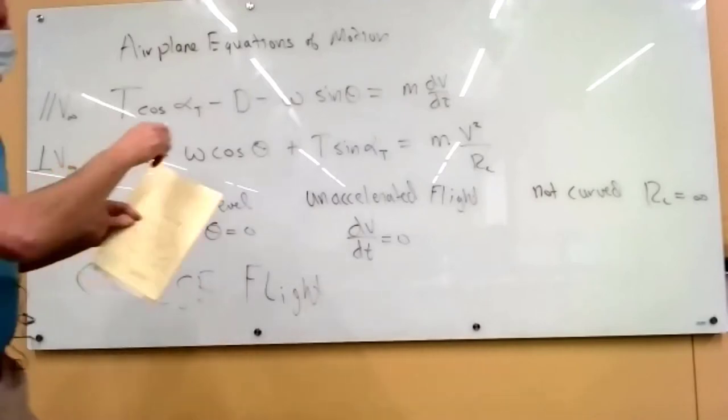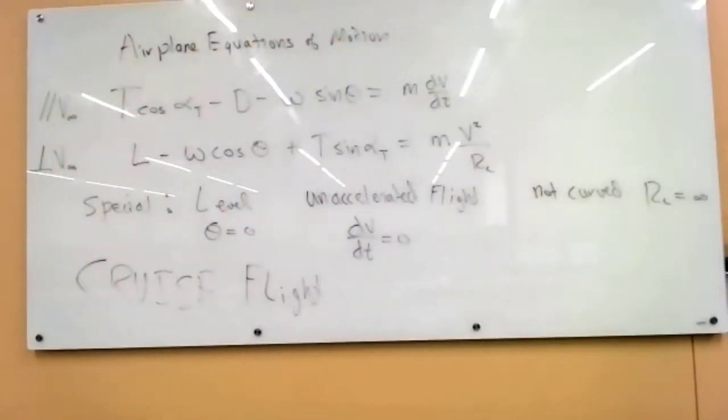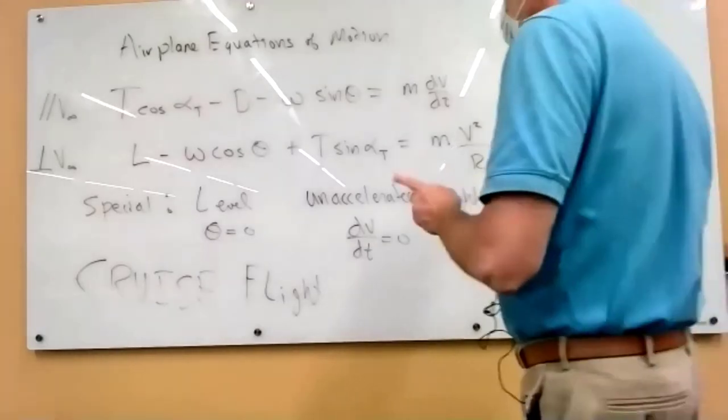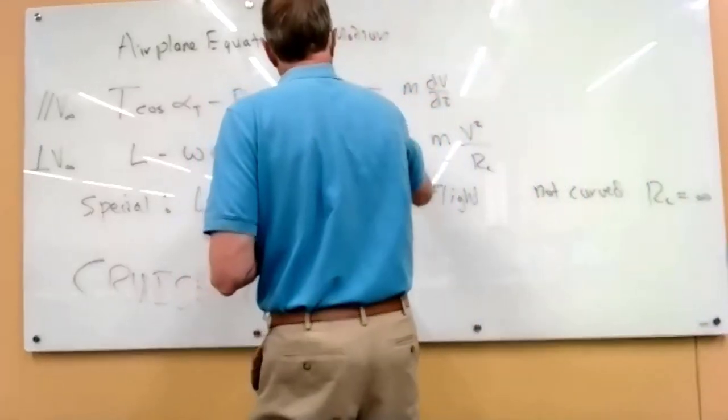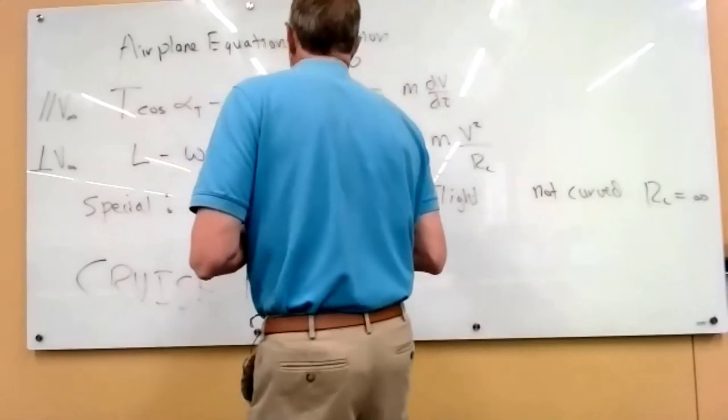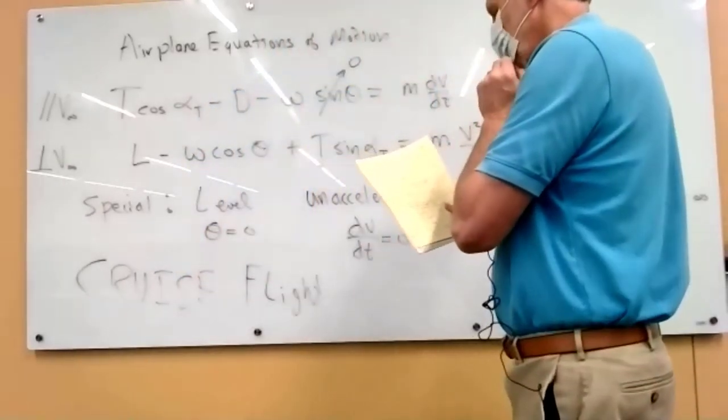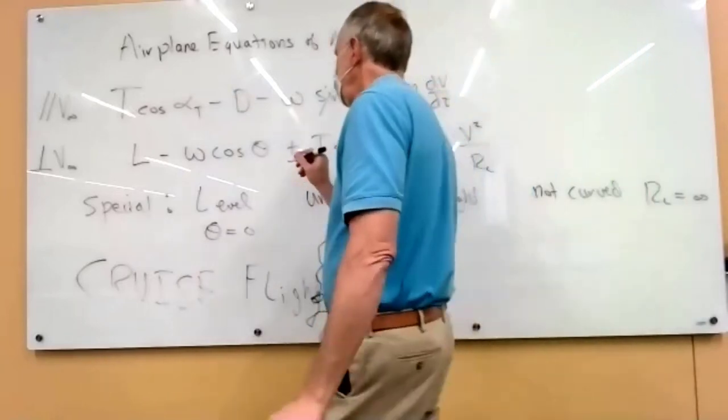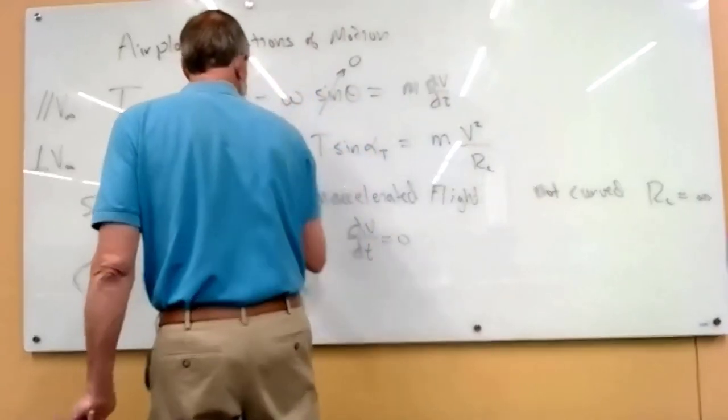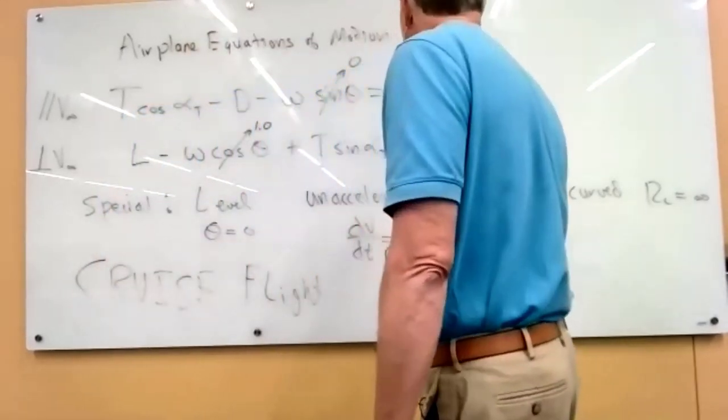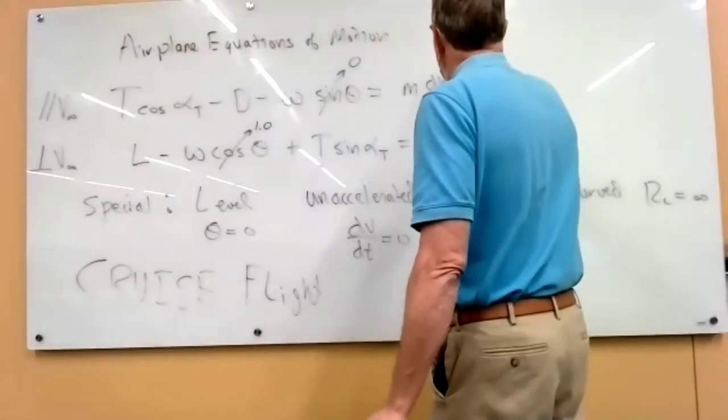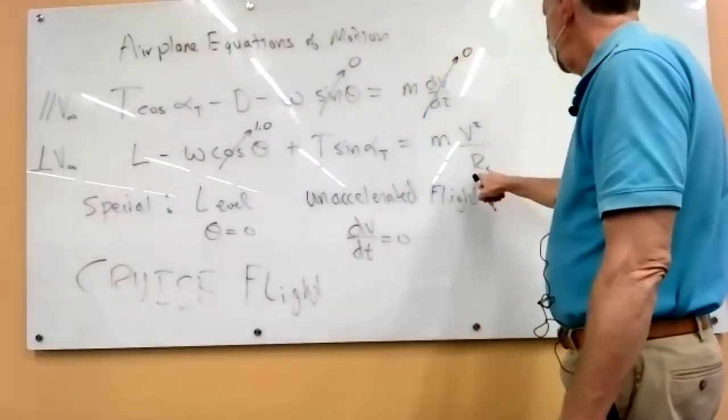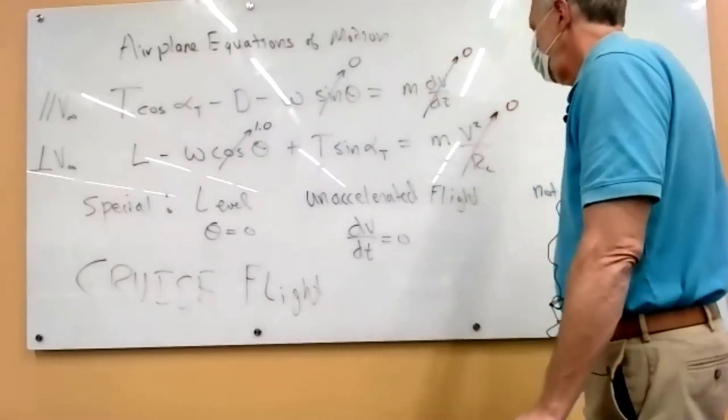So let's look at the equations and see what happens when we make these assumptions. So, applying to these equations, theta is zero, so the sine goes away. And theta is zero, so the cosine becomes one. Unaccelerated, so that's zero. The radius of curvature is infinity, so that's zero.